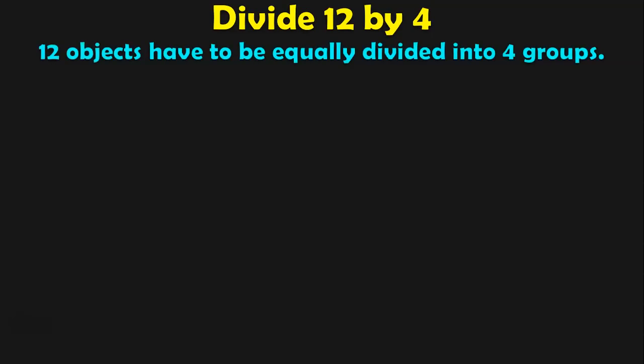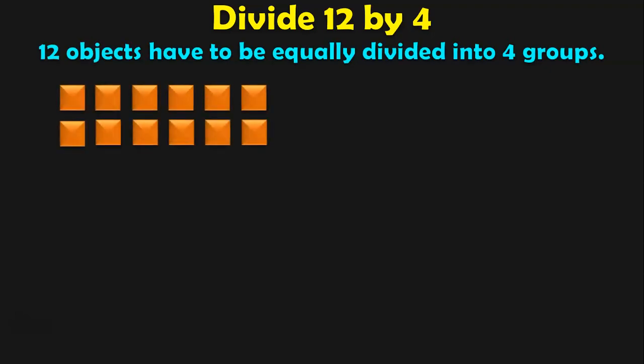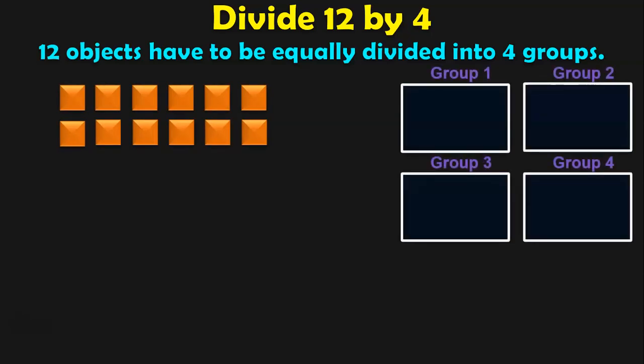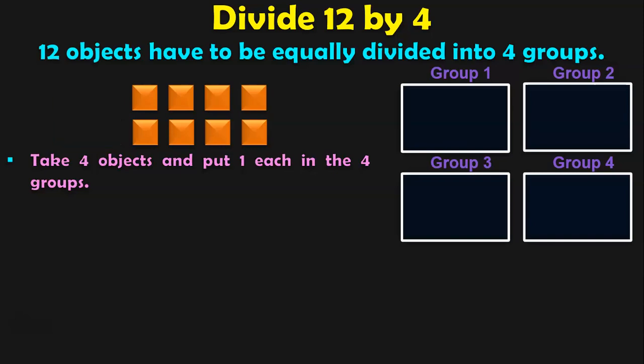Divide 12 by 4, which means 12 objects have to be equally divided into 4 groups. Here we have 12 square objects and 4 groups. First we will have to take out 4 objects because we are going to divide by 4. So take 4 objects and put 1 each in the 4 groups.